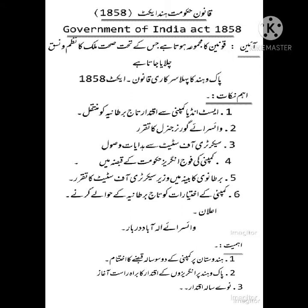ایکٹ 1858 کے اہم نقاط یہ ہیں: سب سے پہلا نقطہ یہ ہے کہ ہندوستان پر East India Company کا خاتمہ ہو گیا اور تمام اختیارات حکومت برطانیہ کے حوالے کر دیے گئے۔ ہندوستان میں نظام چلانے کے لیے حکومت برطانیہ نے اپنا ایک نمائندہ بھیجا جسے Viceroy یا Governor General کہا جاتا تھا۔ یہ Viceroy ہدایات Secretary of State سے لیتا تھا جو برطانوی پارلیمنٹ کا ایک وزیر تھا۔